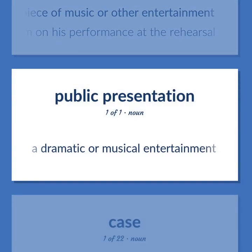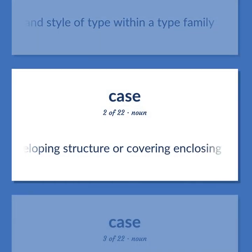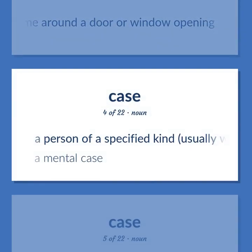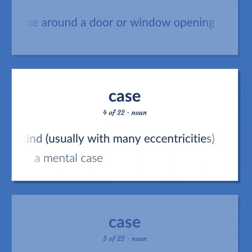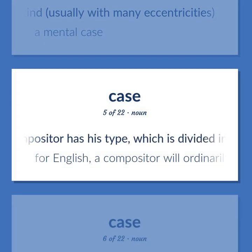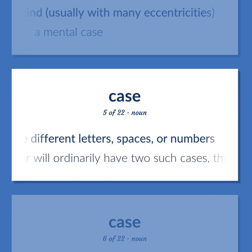A dramatic or musical entertainment. Case: A specific size and style of type within a type family. An enveloping structure or covering enclosing an animal or plant organ or part. The enclosing frame around a door or window opening. A person of a specified kind, usually with many eccentricities. A mental case. Printing: the receptacle in which a compositor has his type, divided into compartments for the different letters, spaces, or numbers. For English, a compositor will ordinarily have two such cases: the uppercase containing the capitals and the lowercase containing the small letters.